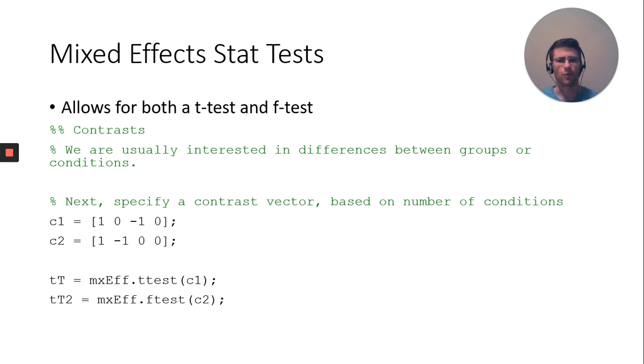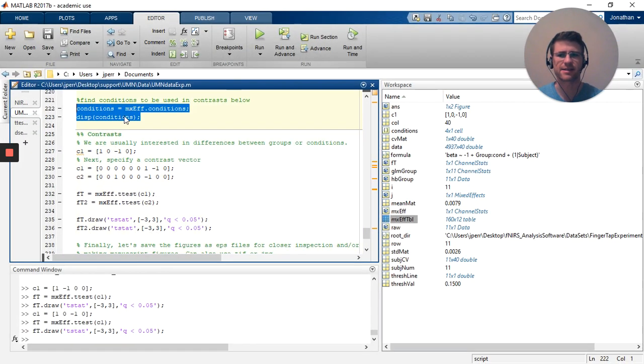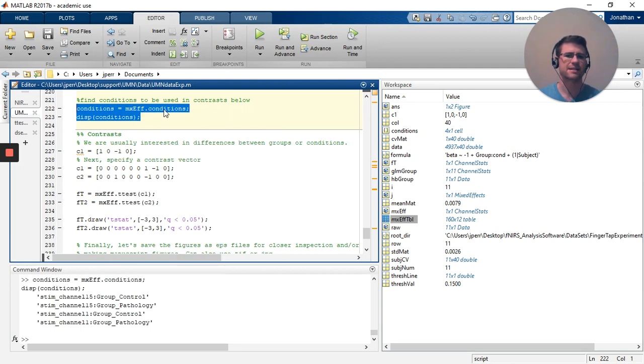What I didn't do is display the conditions. You can use conditions equals mixed effects dot conditions. Here you'll see I have two conditions, stem channel 15 and stem channel 1, and I have a group. So it's the control group and pathology group, control group and pathology group. That's our four conditions that I'm going to contrast using this contrast.